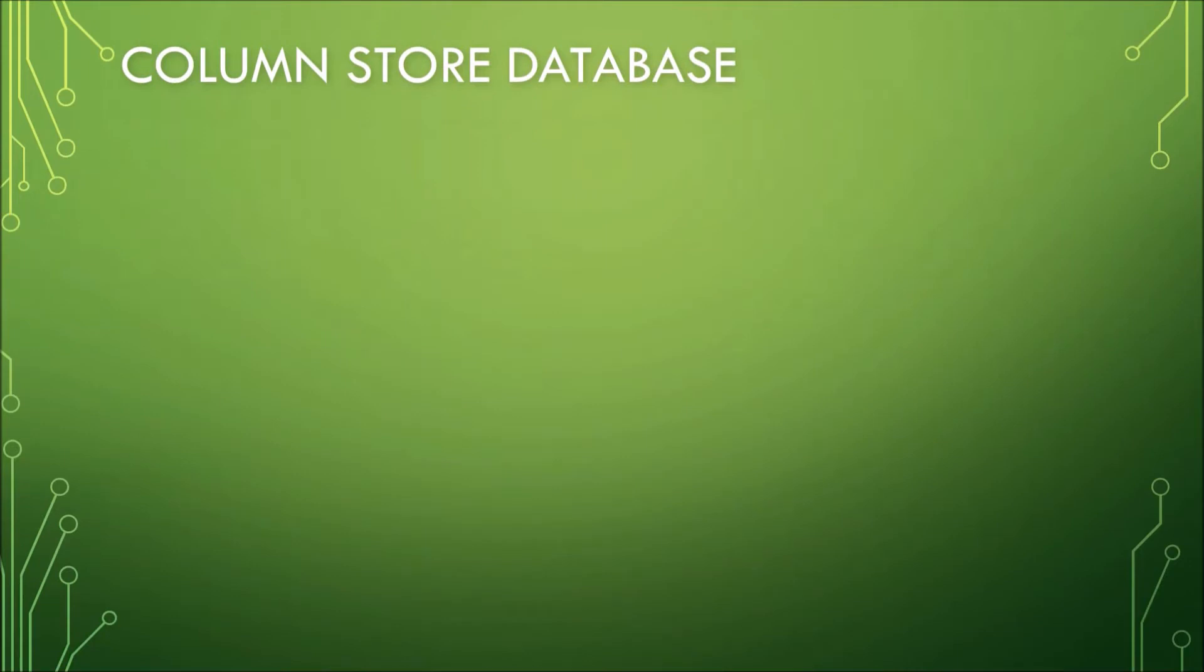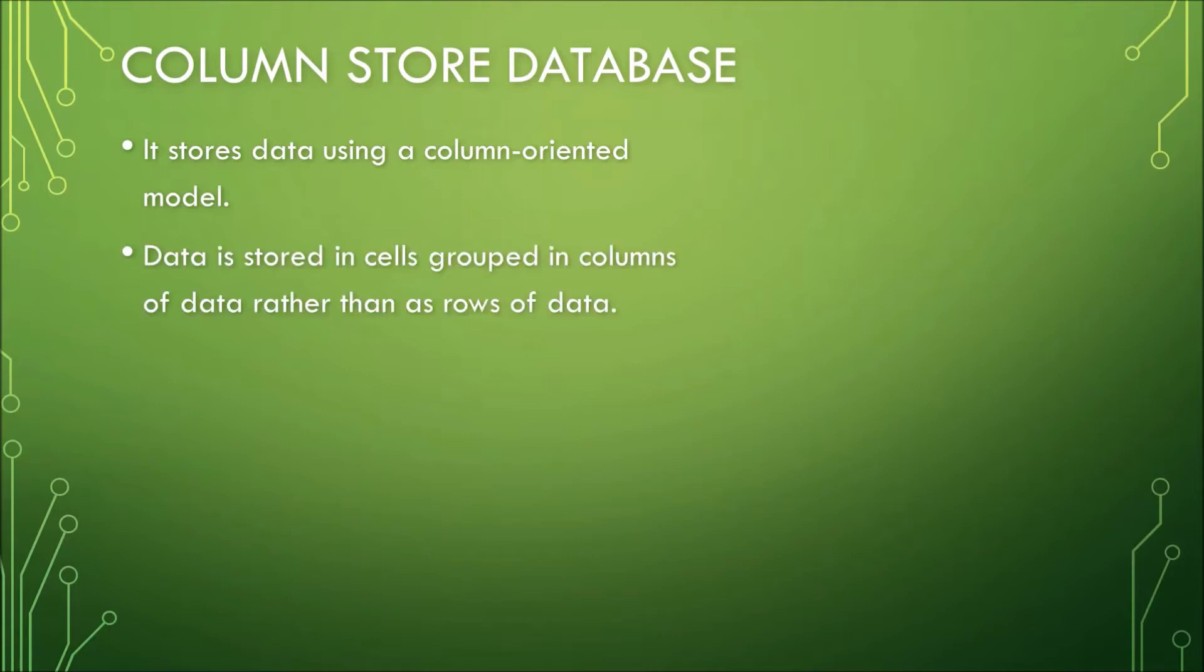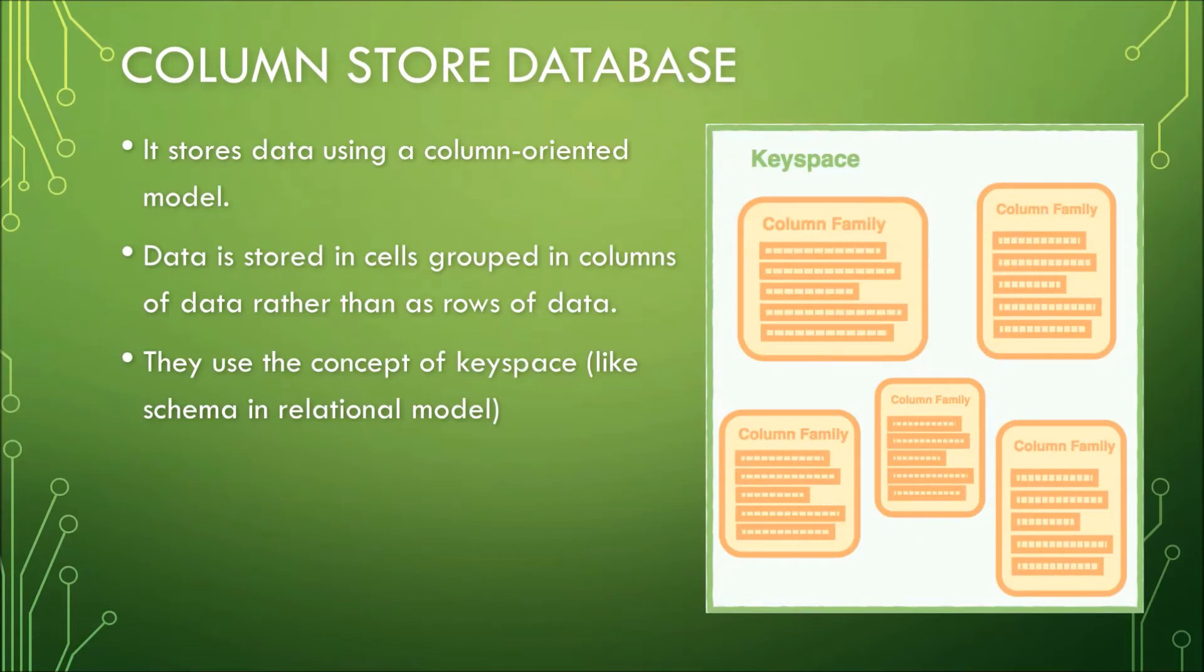Column Store Database stores data using a column-oriented model. Data is stored in cells grouped in columns of data rather than as rows of data. They use the concept of keyspace. It's kind of like a schema in a relational model. So in a relational model, schemas give us a view or structure of the entire database. In a Column Store Database, a keyspace will give us an idea of the entire structure of this Column Store Database.